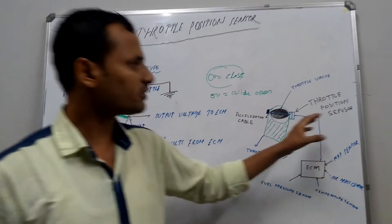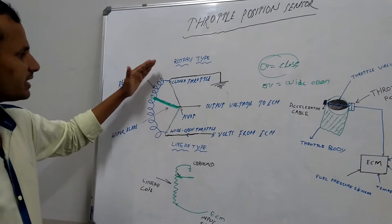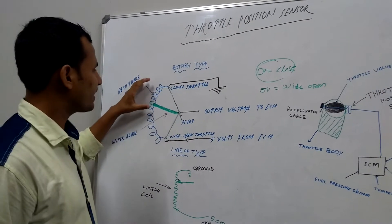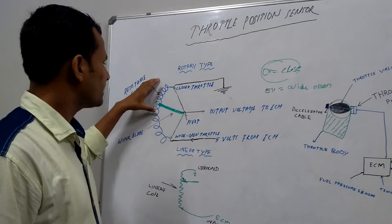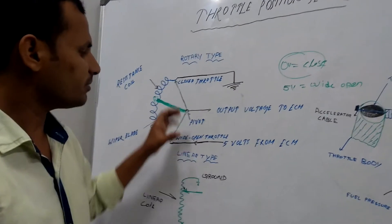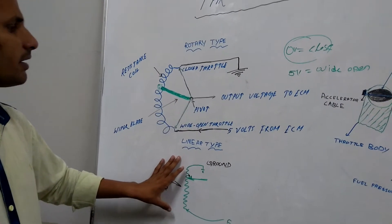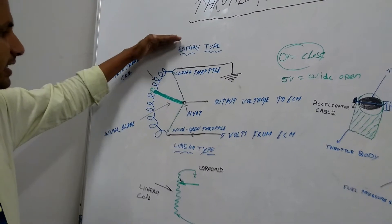Throttle position sensors are of two types: one is rotary type and linear type. Rotary type is like a variable resistor type or a potentiometer type, and the linear one uses the same principle as the rotary type.